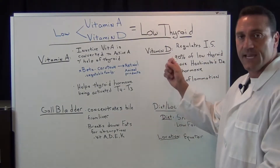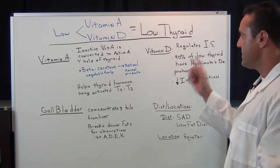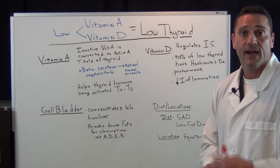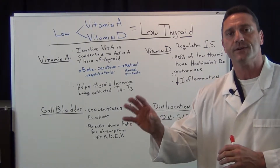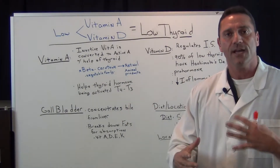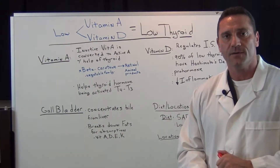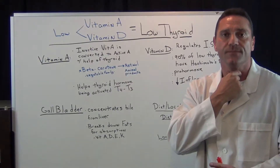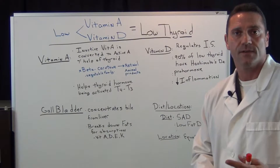Now vitamin D regulates the immune system, and 90% of low thyroid patients have Hashimoto's disease. Hashimoto's is not actually a thyroid disease — it's an immune system disease where your immune system is attacking its own tissue. In particular, with Hashimoto's, your immune system is attacking the thyroid tissue.